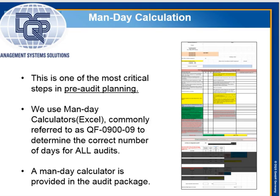One of the most critical steps in the pre-planning phase of the audit is ensuring we do the right mandates. DQS has developed some calculators in Excel format to help us do this. They are referred to as QF0900-09, and they're available in the Quality Manual Form section that we just went through in the previous part of this orientation.